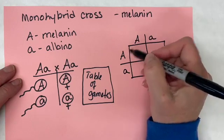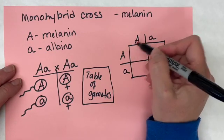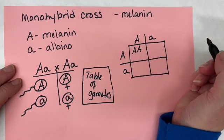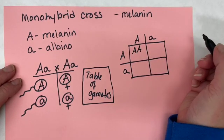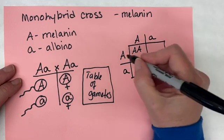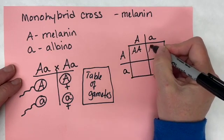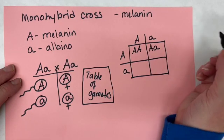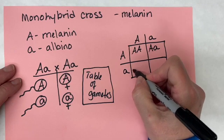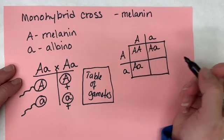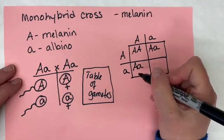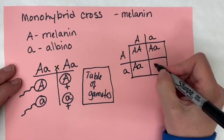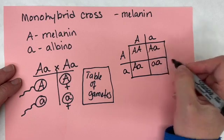We play the game of what happens if this sperm meets this egg. If we do that, the genotype of the offspring is big A big A — homozygous dominant. Continuing: if this sperm meets this egg, the individual is heterozygous. If this sperm meets this egg, the individual is also heterozygous, written big A then little a. In this last sperm-and-egg fertilization, the offspring would be little a little a.